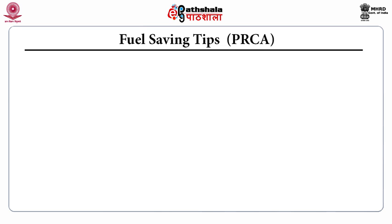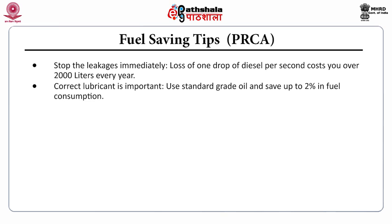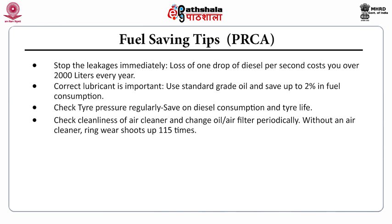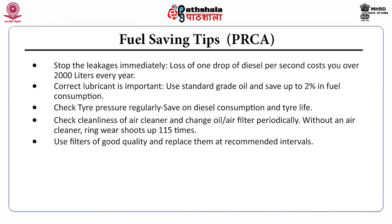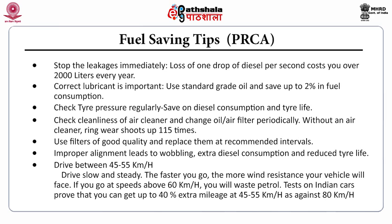As per PCRA, some fuel-saving tips are: stop leakages immediately — loss of one drop of diesel per second costs over 2,000 litres every year. Use the correct lubricant — standard grade oil can save up to 2% in fuel consumption. Check tyre pressure regularly for savings on diesel consumption and tyre life. Check the cleanliness of the air cleaner and change oil and air filters periodically — without an air cleaner, ring wear shoots up 115 times. Use filters of good quality and replace them at recommended intervals. Improper alignment leads to wobbling, extra diesel consumption, and reduced tyre life. Drive between 45 to 55 km per hour — drive slow and steady. The faster you go, the more wind resistance your vehicle faces. Tests on Indian cars prove that you can get up to 40% extra mileage at 45–55 km/h compared to 80 km/h.